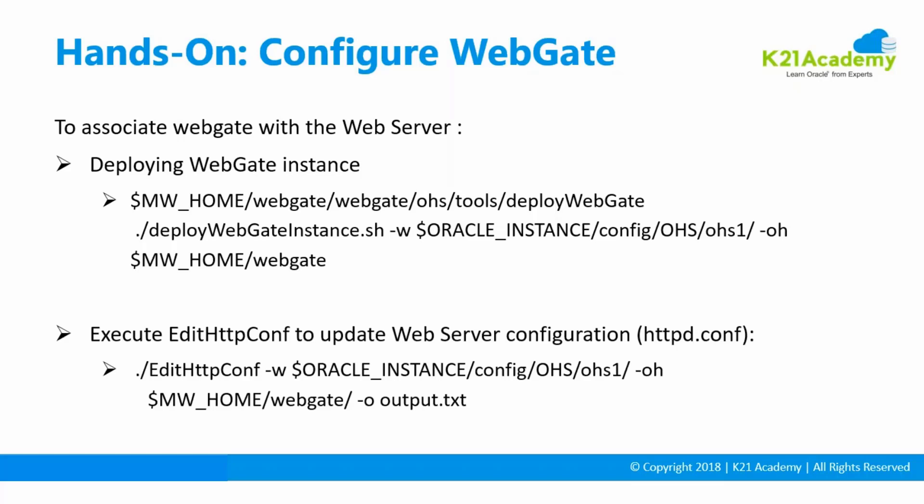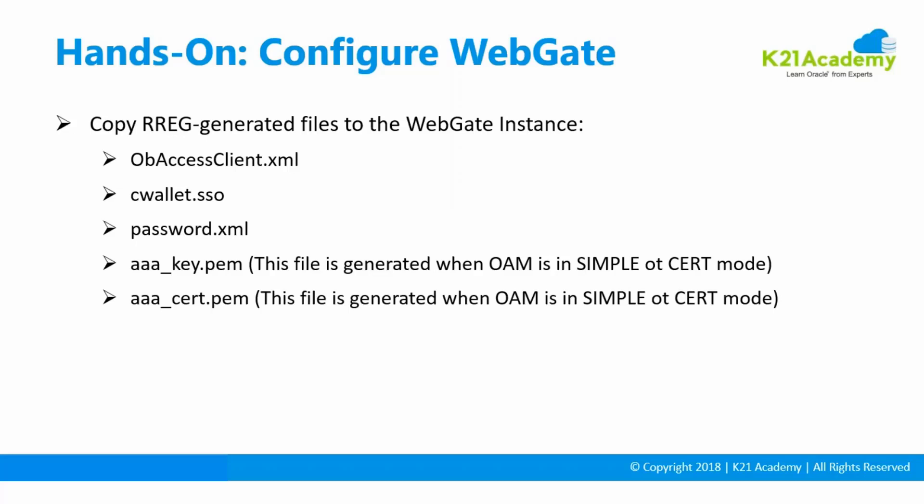Then we need to update the httpd.conf. You can either manually update it by including WebGate.conf, or run the command edithttpconf. This edithttpconf comes from the WebGate software - you pass the minus-w flag for the Oracle HTTP server instance and specify the Oracle Home for WebGate, and it updates the HTTP server. Finally, we copy the files generated on the OAM server: obaccessclient.xml, cwallet.sso, password.xml, and the perm file.